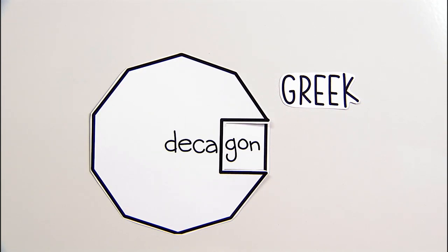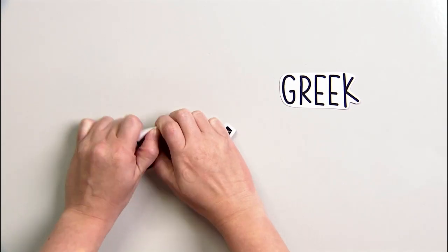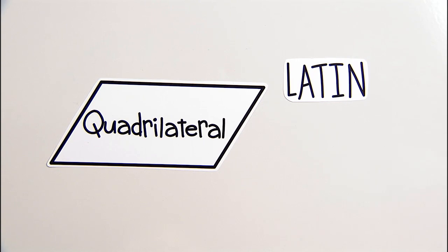But you don't often come across the word tetragon for a shape with four angles. For some reason, the Latin quadrilateral is the common term.